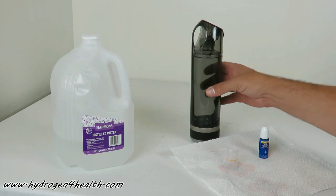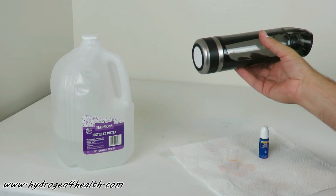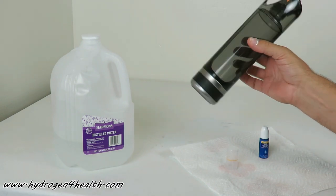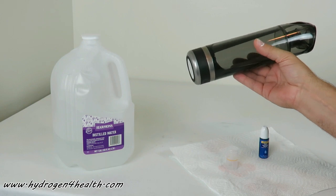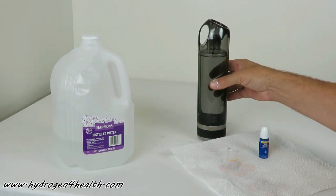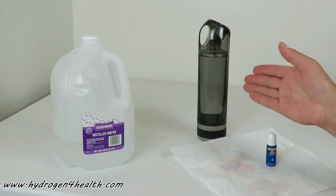Typically, bottles like this that are straight electrolysis bottles that don't have PEM or dual chamber technology will get between 0.2 and 0.7 ppm of hydrogen content.